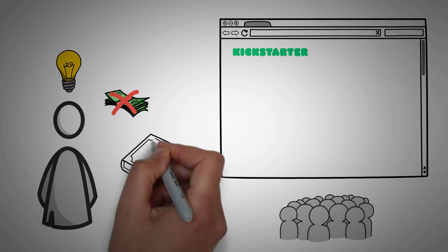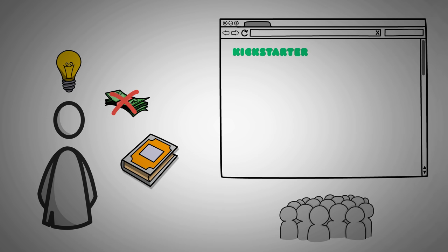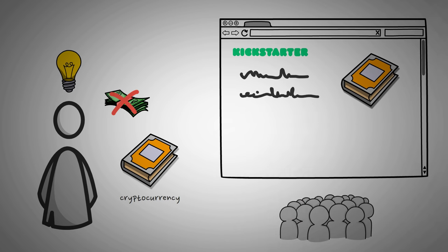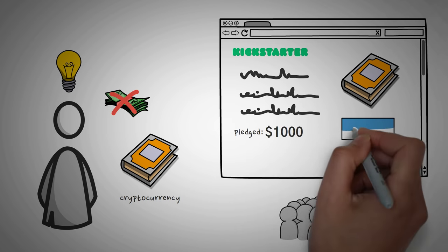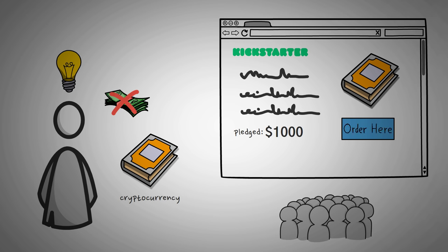For example, I might have an idea for a book that explains cryptocurrency ideas and concepts. I'd create a page and say that I have a goal of getting $1,000 in donations. In turn, for people donating, I'll give out a book to everyone who donates at least $10.